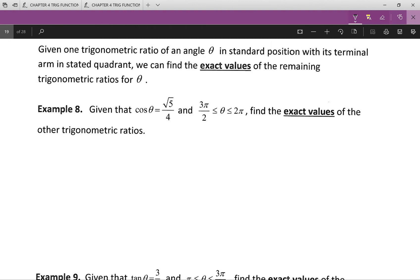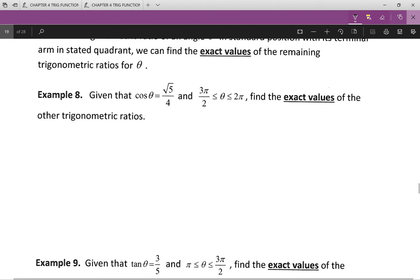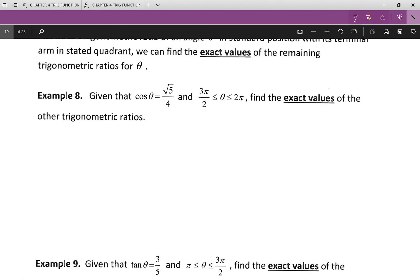So given cos theta equals root five over four and three pi over two is less than or equal to theta, which is less than or equal to two pi, find the exact values of the other trigonometric ratios.